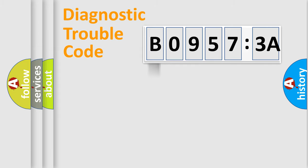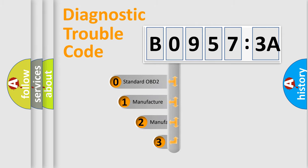Powertrain, Body, Chassis, Network. This distribution is defined in the first character code.